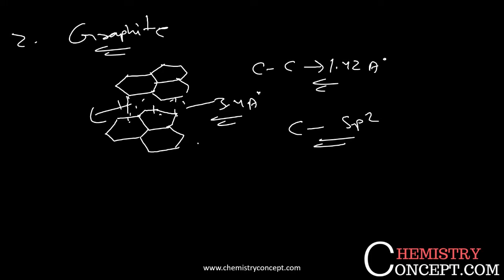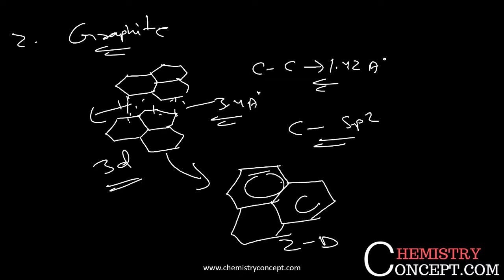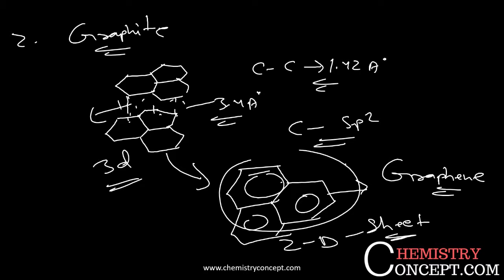The p orbitals of each carbon atom in a hexagonal unit overlap to form pi bonds. This creates conjugated double bonds in the 2D sheet. The 2D sheet of graphite is known as graphene, which is highly conductive and a zero band gap semi-metallic superconductor.